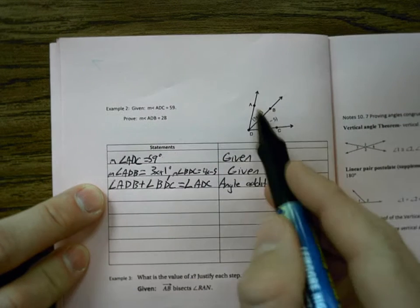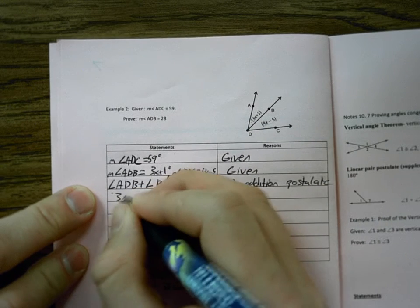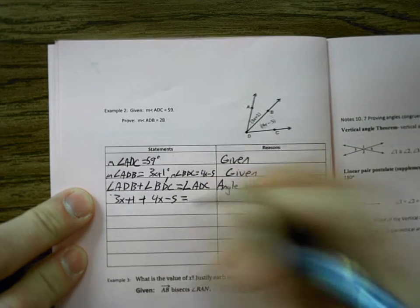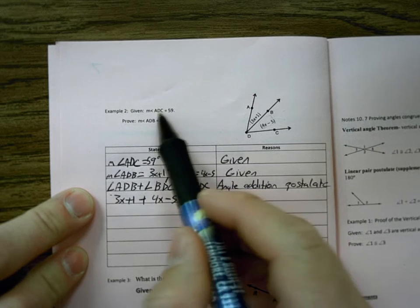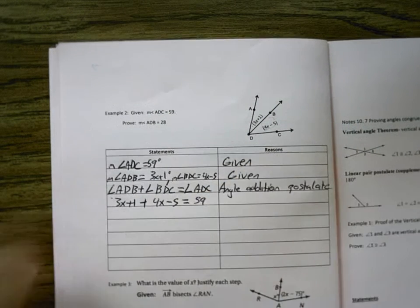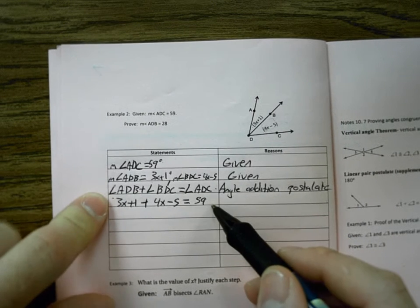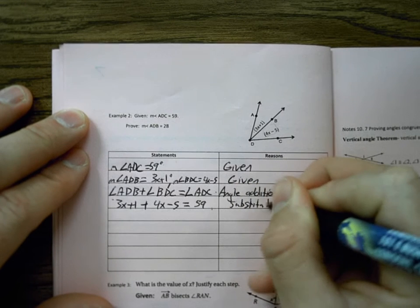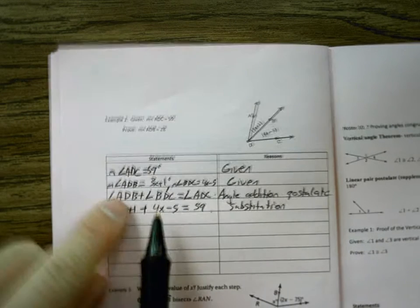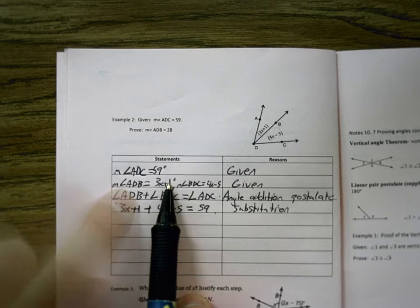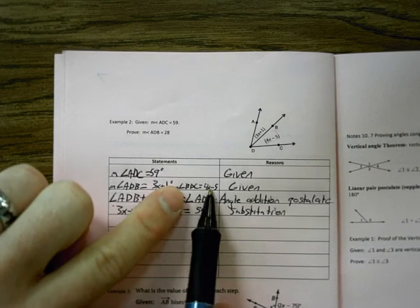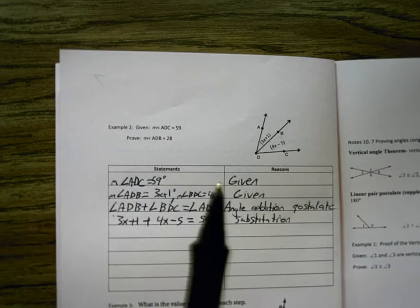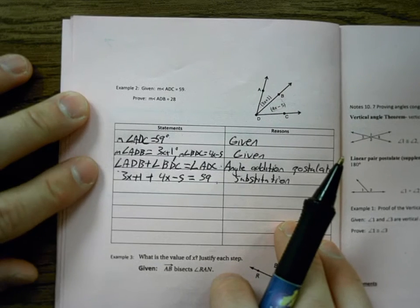So I can replace ADB with 3X plus 1 plus my other angle, 4X minus 5, equals the total of the large angle, which is given to me, it's right here, 59. To go from letters to numbers and letters, that's substitution. We substituted that stuff in. You can only use substitution when we have these statements. See how I said this is equal to this? I can trade them out. That means substitution. This is equal to this, I can trade it out because they're equal to each other. This angle is equal to a number, I can trade it out because it's equal to each other. I can substitute it.